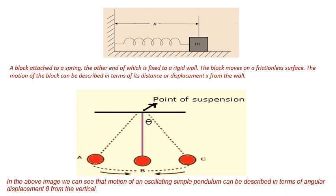The diagram shows a block attached to a spring, the other end of which is fixed to a rigid wall, and the block moves on a frictionless surface. The motion of the block can be described in terms of its distance or displacement x from the wall.